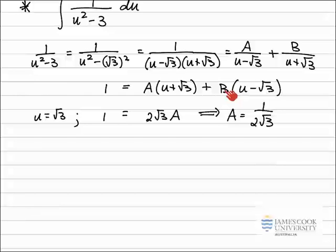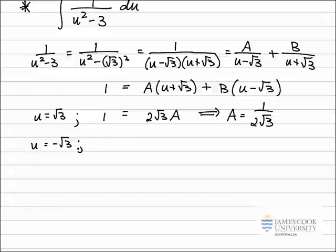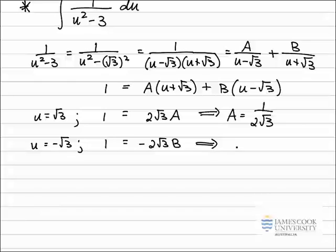To solve for B, I cover up A, so I let u equal minus root 3. The first term becomes zero because minus root 3 plus root 3 is 0, and I'm left with minus 2 root 3 times B equals 1. So I can rearrange that for B, and I get B equals negative 1 over 2 root 3.